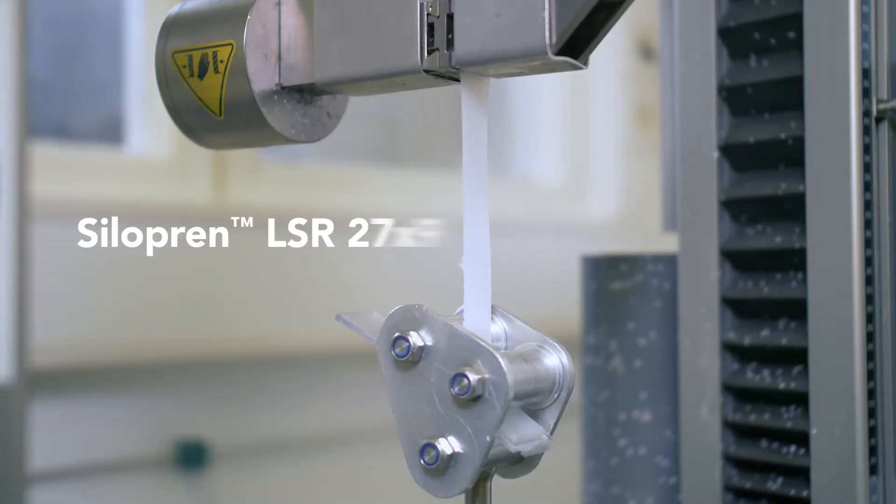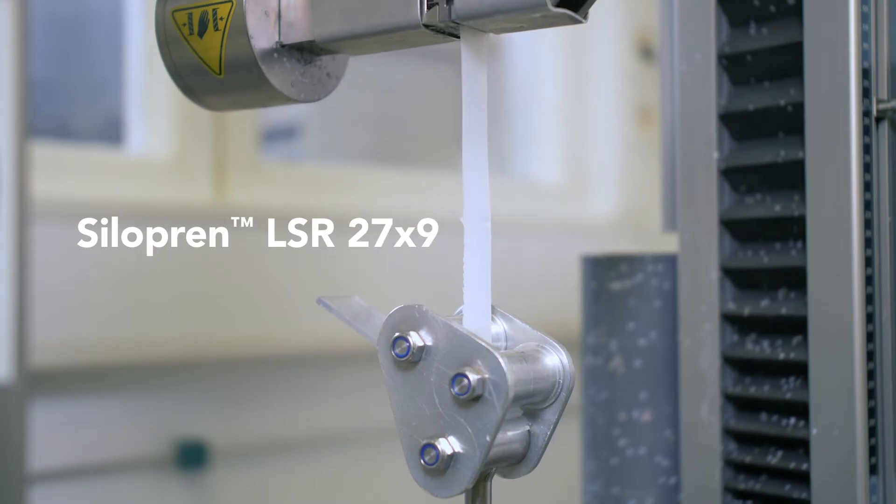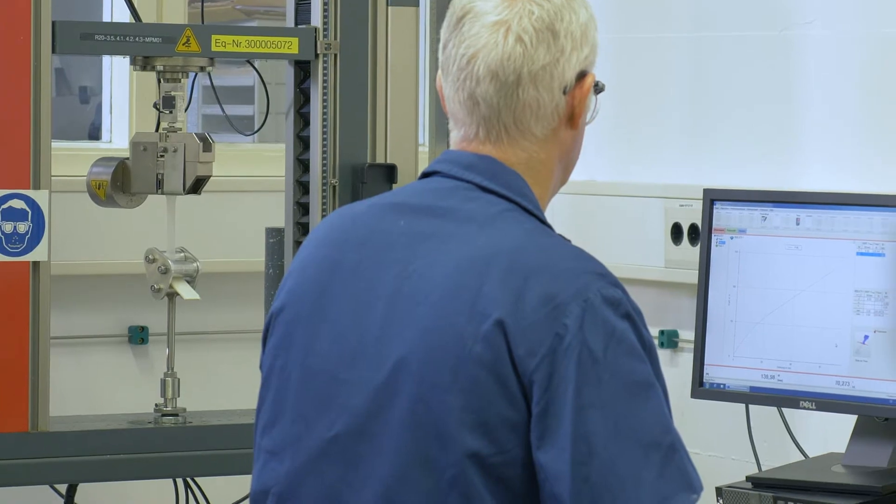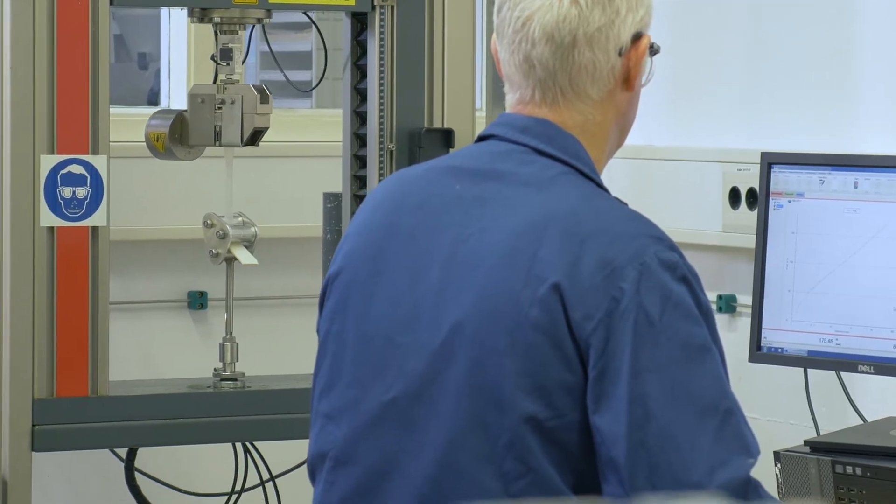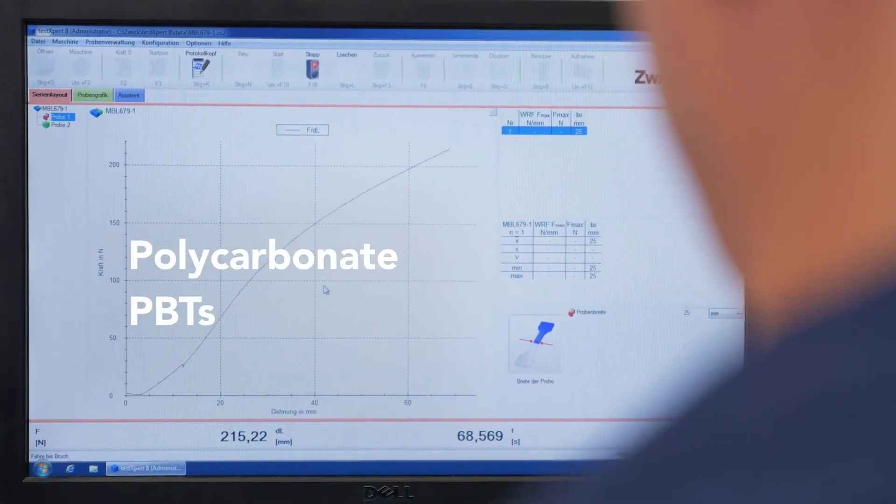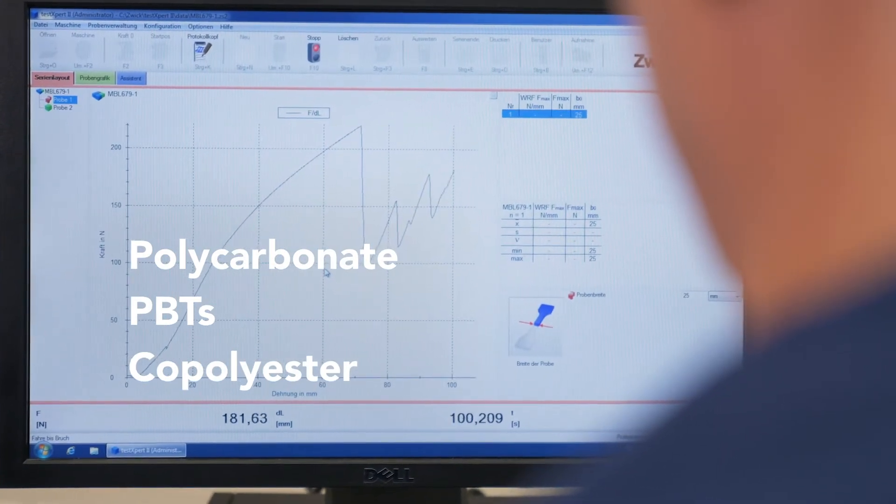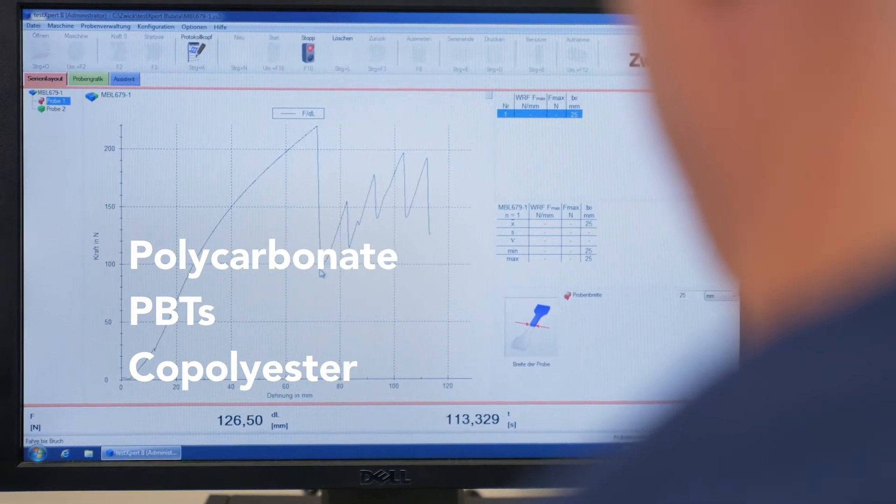Siliprin LSR27X9 liquid silicone rubber series is a strong self-bonding portfolio that can effectively adhere to thermoplastics such as polycarbonate, PBT, and copolyester substrates with which adhesion was previously difficult or even thought of as impossible.